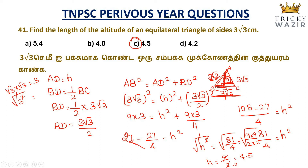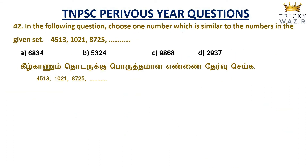Next sum: In the following question, choose one number which is similar to the numbers in the given set. All numbers in the given set share a common pattern. The set is 4513, 1021, 8725. We apply the divisibility rule of 3 — add the digits of each number.